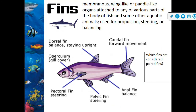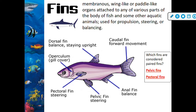Fins are membranous, wing-like or paddle-like organs attached to various parts of the body of fish and some other aquatic animals, used for propulsion, steering, or balancing. We'll get into the different types and shapes of fins and all the proper names later. The operculum is a gill cover — that is not a fin. You have your dorsal fin, anal fin, pelvic fin, pectoral fin, and caudal fin, or tail fin. Your pelvic fins and pectoral fins are paired fins.